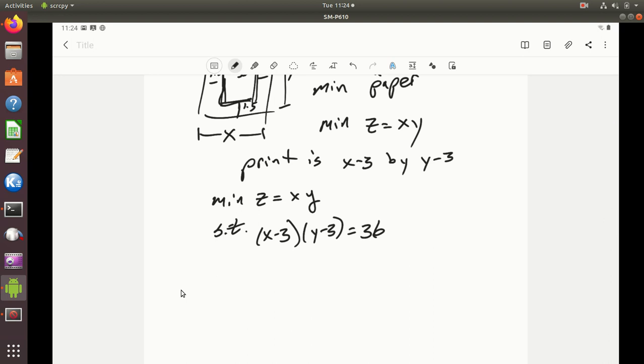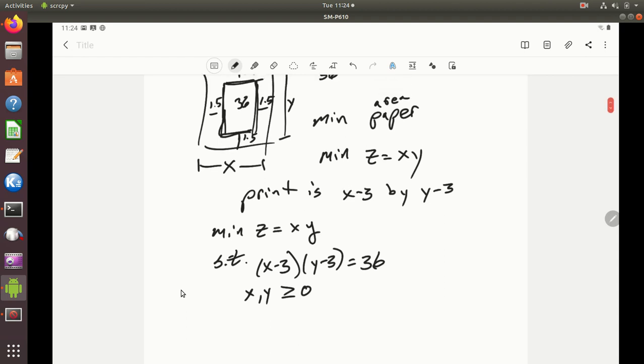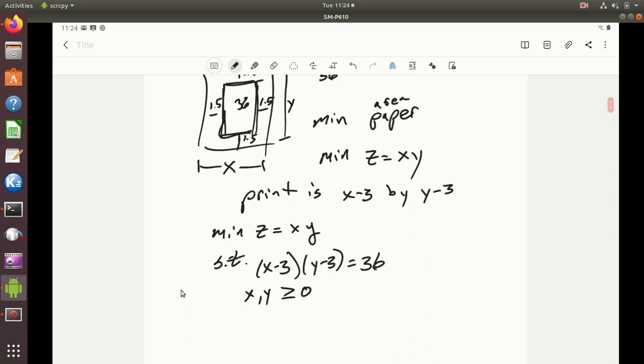We are trying to minimize z equal x times y subject to, we do have some things. We know that the x and y need to be greater than or equal to 0 and so forth. But we also know the print. So we have x minus 3 times y minus 3, that needs to be 36. Let's see what else we know.